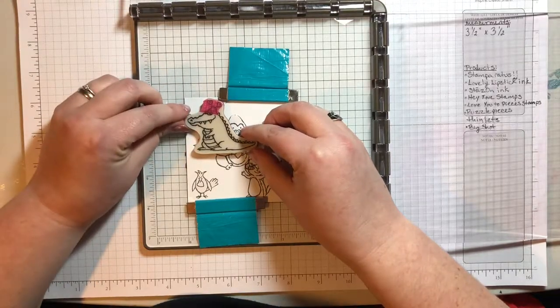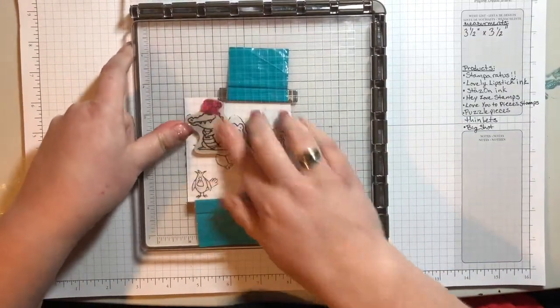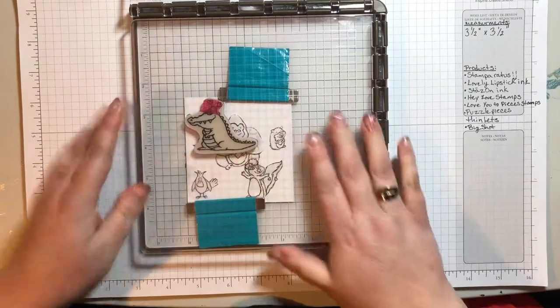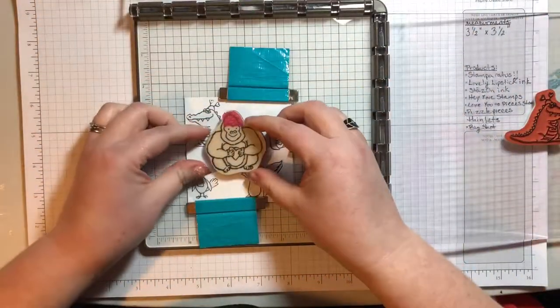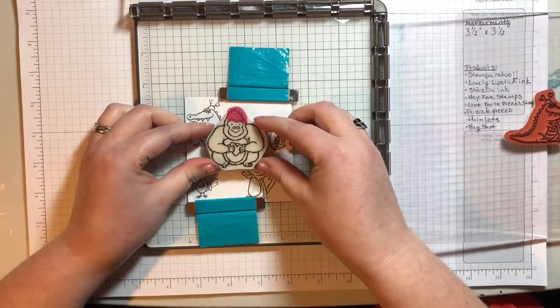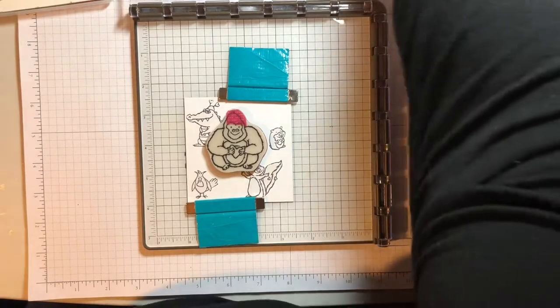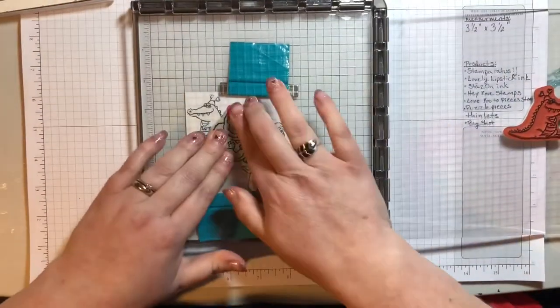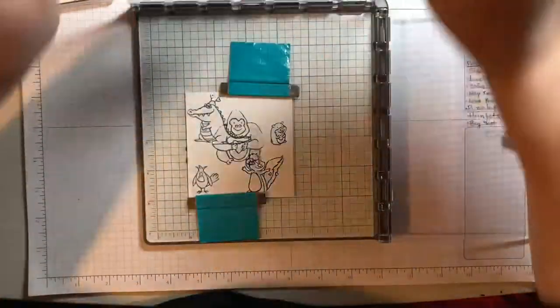All right, so this guy is right here. And now he's mounted on this plate. And then this guy goes in the middle. Just like that. And now he's mounted on this plate.